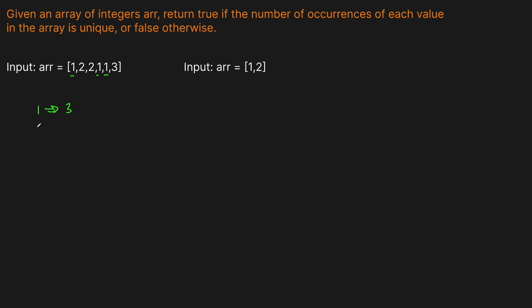How many 2s do we have? We have two 2s. And for the 3, we have one 3. So are all of these counts unique? Yes — none of these counts are duplicates. There's a 3, a 2, and a 1. So for this one we would return true, because they're all unique.